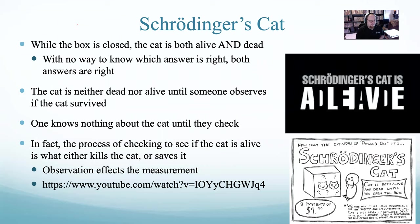This is a problem with the Bohr model. The Bohr model says electrons orbit at a set radius, and it also implies they orbit at a set velocity. But Heisenberg and Schrödinger said you can't know both — the process of figuring that out will change it. So there must be something else going on with the Bohr model.